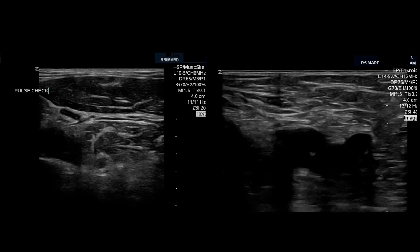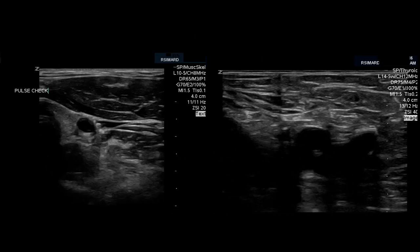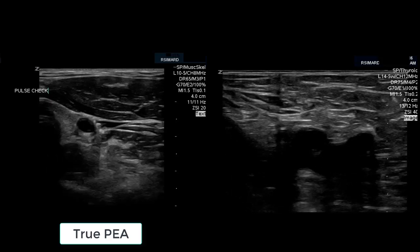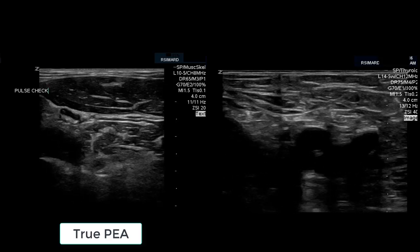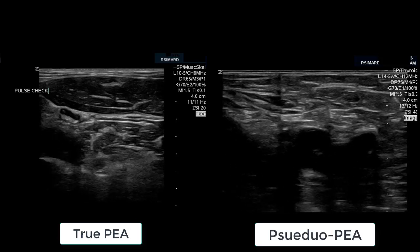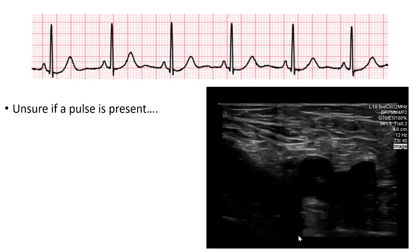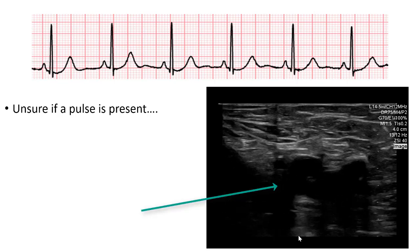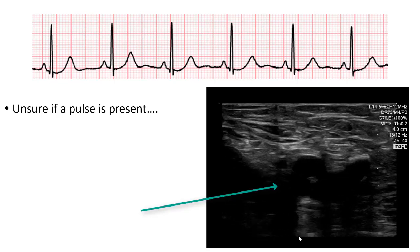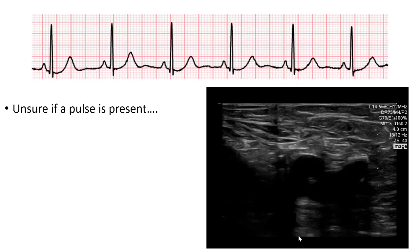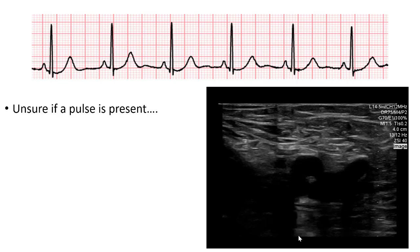Now here they are side by side. On the left, there is no pulsation and the carotid artery flattens like a pancake with gentle pressure. On the right, the artery cannot be compressed and pulsations are clearly evident. So now, if you see this rhythm and are unsure if a pulse is present, just use your POCUS. In this case, there is clearly a pulsating pulse — this is not a cardiac arrest state, but a severe shock state.